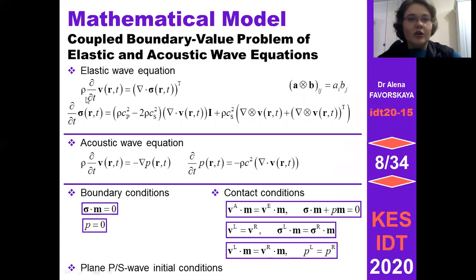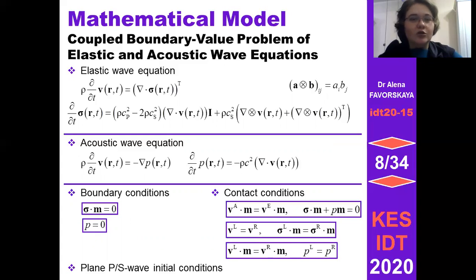The elastic wave equation involves: density ρ, time t, r the radius vector of our coordinate system, σ the symmetrical stress tensor, v the velocity of the medium (derivative on time of displacement), and cp and cs the speeds of pressure and shear waves respectively. Pressure waves are also known as longitudinal waves and compression waves. The acoustic wave equation is written in terms of pressure field p. The boundary value problems include corresponding boundary conditions and initial conditions of a plane P-wave.